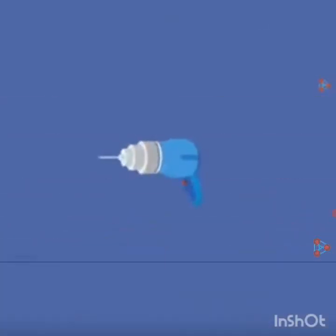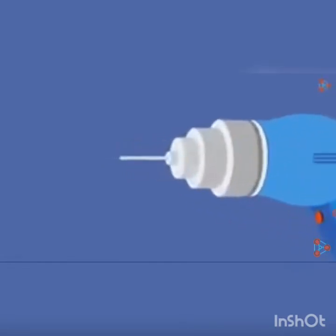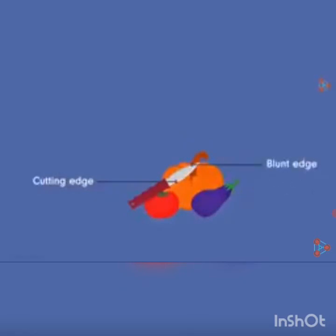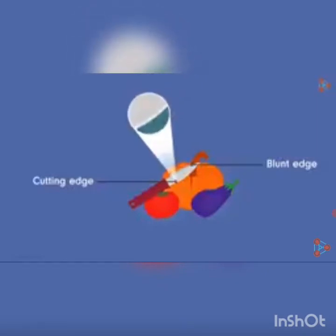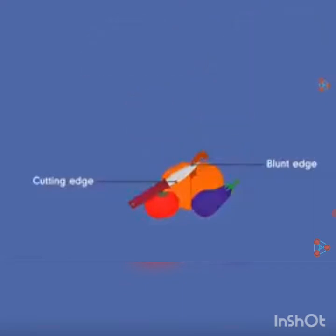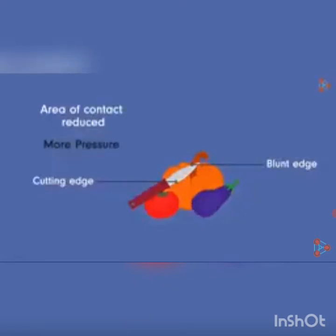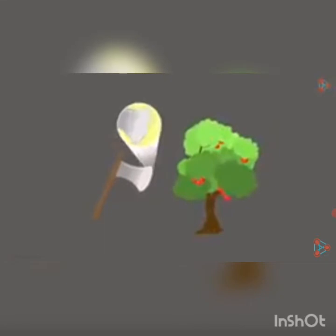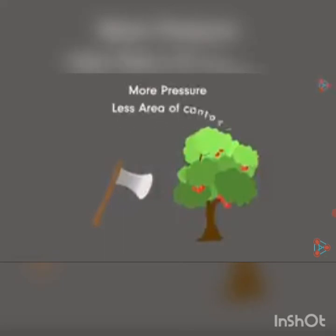Drill machines also have a pointed tip for the same reason — the small area creates high pressure to drill into walls. Similarly, you can easily cut vegetables using the cutting edge of a knife, but the blunt edge makes it difficult. Under magnification, the cutting edge has small triangle-like shapes with sharp outer points, greatly reducing the contact area and increasing pressure. Axes used to cut trees also have sharp cutting edges to increase pressure on the tree due to less area of contact.